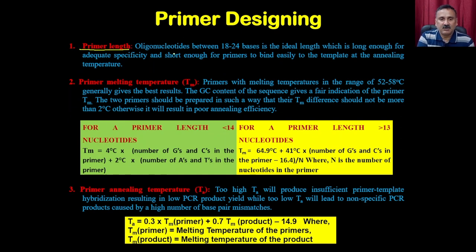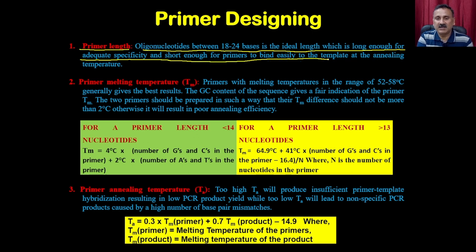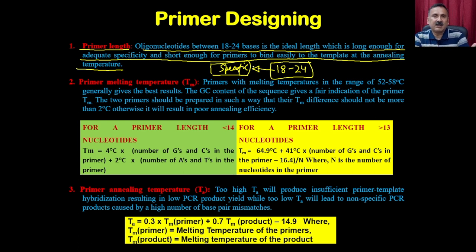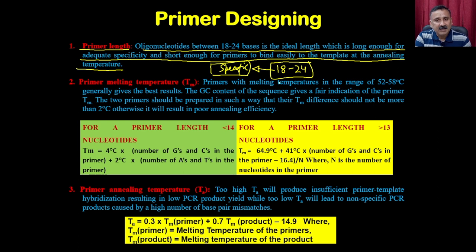Regarding primer design guidelines: first, the length of the primer. An oligonucleotide of 18 to 25 bases is ideal — long enough for adequate specificity but short enough to bind easily to the template at the annealing temperature. If you go shorter, the primer loses specificity because that small stretch could be found in multiple places in the genome. For example, a 10-nucleotide primer could match many genomic locations by chance, compromising specificity.